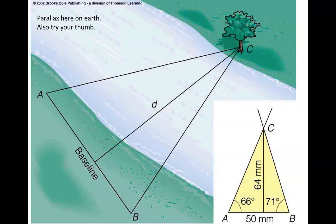On Earth, we can do a form of parallax by doing triangulation. For example, if we wanted to measure the distance to a tree on the opposite side of a stream, we could lay out a baseline between two points A and B, and measure the angle between the line AB and the position of the tree at each vertex. By doing so and applying elementary trigonometry, we could measure the distance d without actually having to pace it off — as long as we knew the baseline length and those two angles.